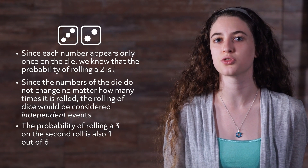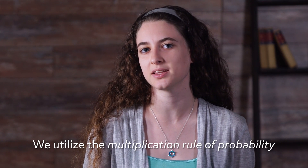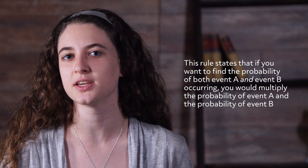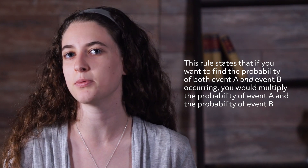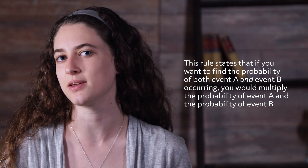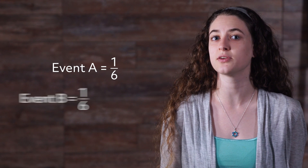Therefore, the probability of rolling a 3 on the second roll is also 1 out of 6. But how do we figure out the probability of both of these events occurring? To answer this question, we utilize the multiplication rule of probability. This rule states that if you want to find the probability of both event A and event B occurring, you would multiply the probability of event A and the probability of event B. In our example, event A would be the probability of rolling a 2 on the first roll, which is 1 out of 6. Event B would be rolling a 3 on the second roll, the probability of which is also 1 out of 6. Therefore, to find the probability of both these events occurring, we would take 1 out of 6 times 1 out of 6.